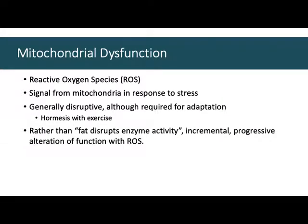Rather than fat globs in the cell sticking to and disrupting enzyme activity, I think that the progressive accumulation — the progressive release of higher amounts of reactive oxygen species into the cell, the loss of control on the production of ROS — is the link between high energy intake, high fat in the cell, and diabetes. Let me try to describe in pictures what that might represent.